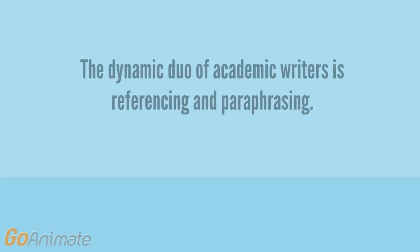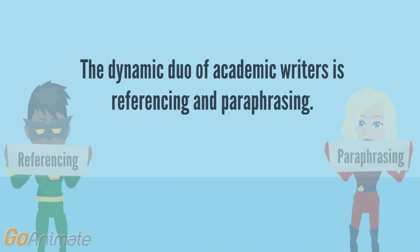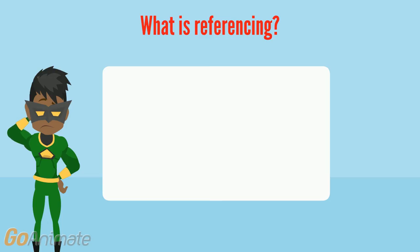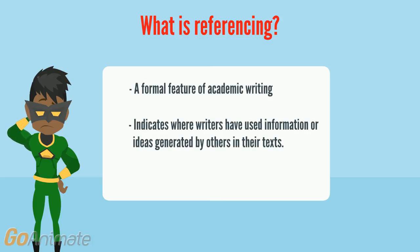The dynamic duo of academic writers is referencing and paraphrasing. Referencing is a formal feature of academic writing. It indicates where writers have used information or ideas generated by others in their texts.